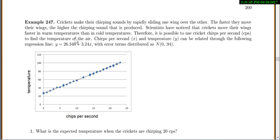So we'll try this out, see what that actually means to us. So crickets make their chirping sounds by rapidly sliding one wing over the other. The faster they move their wings, the higher the chirping sound that's produced. Scientists have noticed that crickets move their wings faster in warm temperatures than in cold temperatures. Therefore, it's possible to use cricket chirps per second to find the temperature of the air. Chirps per second and the temperature can be related through this following equation, y equals 26.346 plus 3.24x, with error terms distributed as a normal distribution with a mean of 0, variance of 0.94.